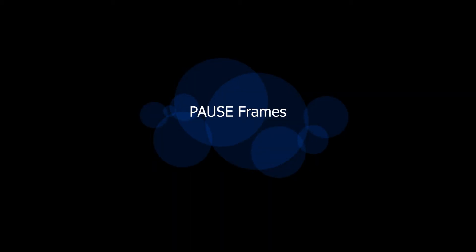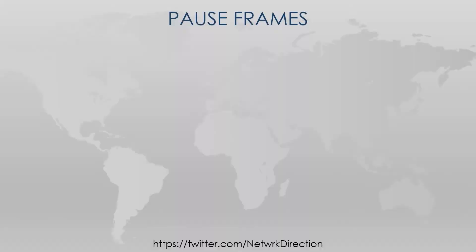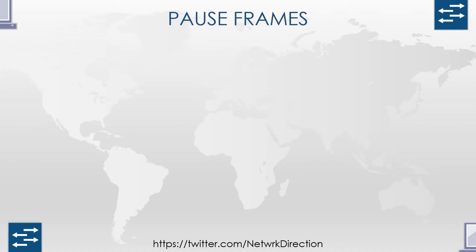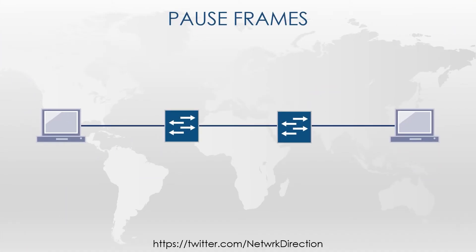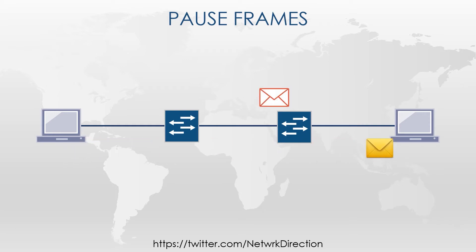Within the Ethernet standard we have a useful flow control feature called the pause frame. Sometimes one device will send so much traffic that other parts of the network can become overwhelmed, causing congestion. If nothing is done about this, some traffic will eventually be dropped. An overwhelmed device can send a pause frame to the original sender, asking it to take a break from sending, which allows other devices to catch up. The goal of this is to prevent frames from being lost.